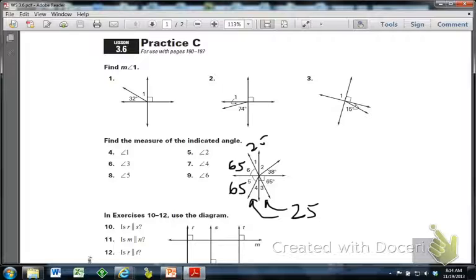And so I know that angle 2 plus 38 equals 90 because 25 plus 65 is 90. So it looks like it's going to be 52.